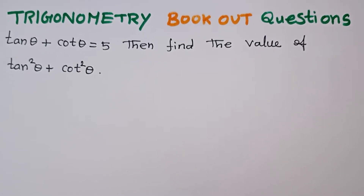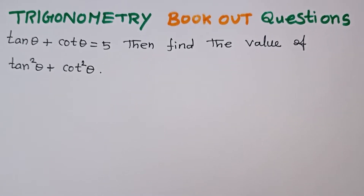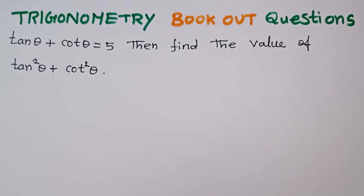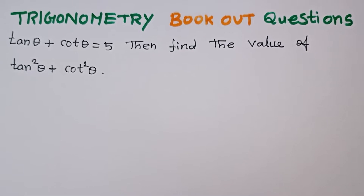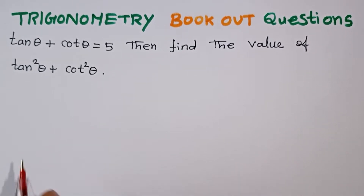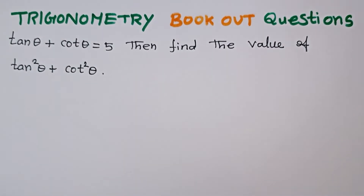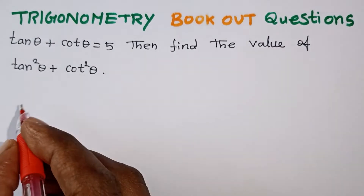Given: tan θ plus cot θ is equal to 5. Find the value of tan²θ plus cot²θ. This is very simple. Usually, what is the common mistake?